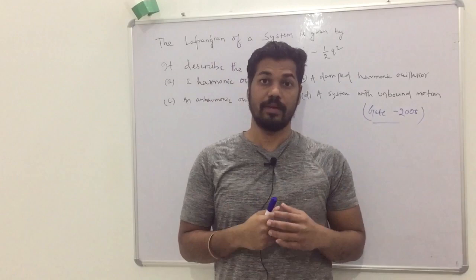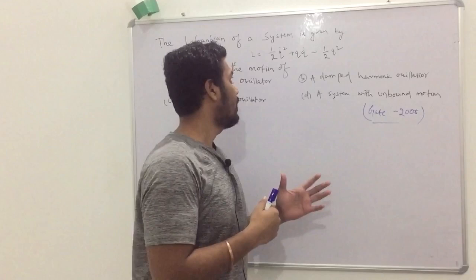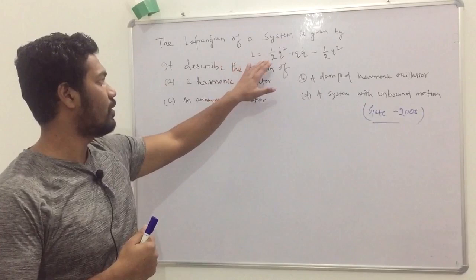This question belongs to the chapter on Lagrangian mechanics. Let's see the question. The Lagrangian of a system is given by L equals half Q dot squared plus Q Q dot minus half Q squared.